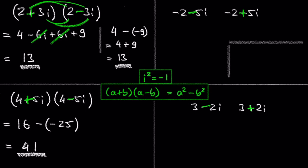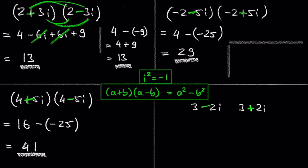In the next example, we square the negative 2, which is 4, and we square the negative 5i, which is negative 25. With the negative sign between these two numbers, we get 4 minus negative 25, which is 29. By the way, we see in the last two examples that 5i and negative 5i, when squared, give us the same result: negative 25.